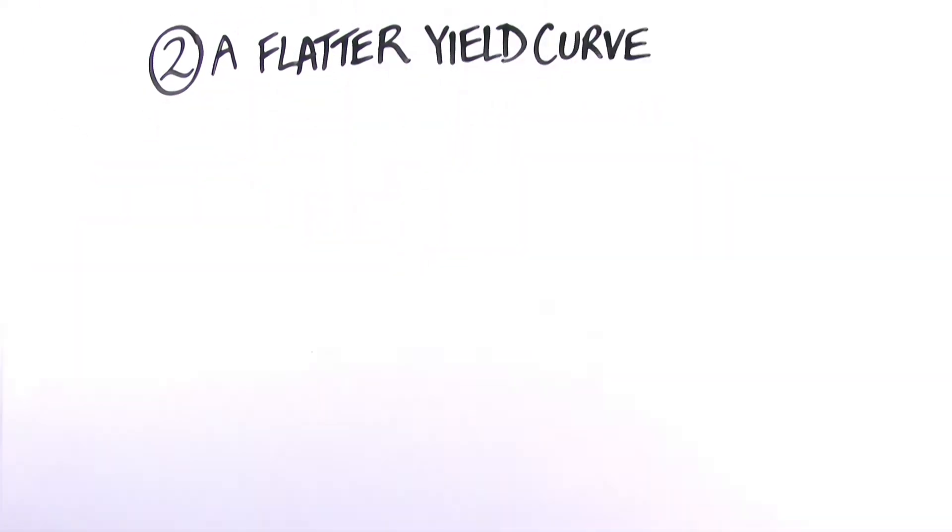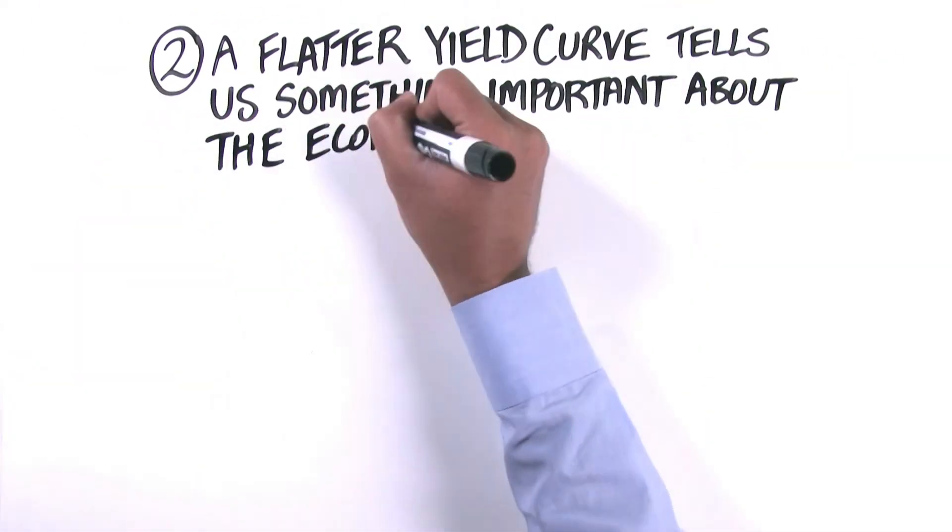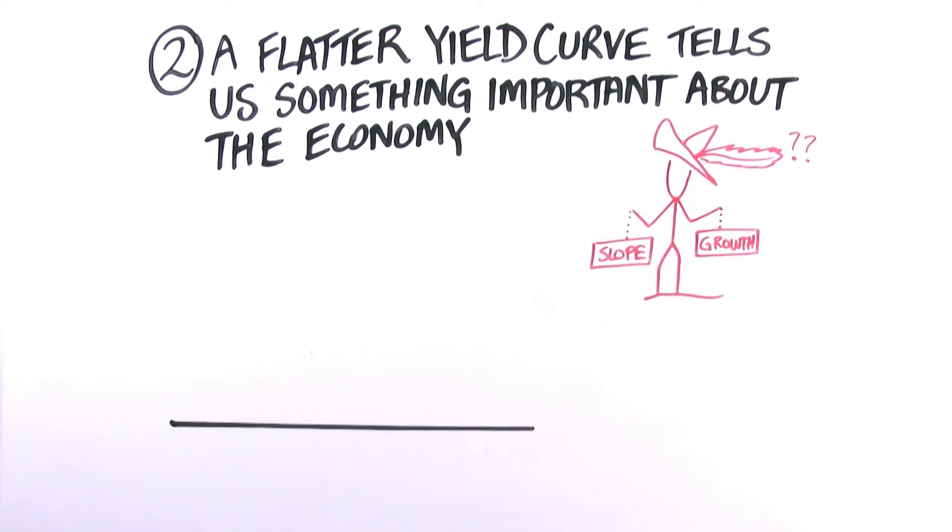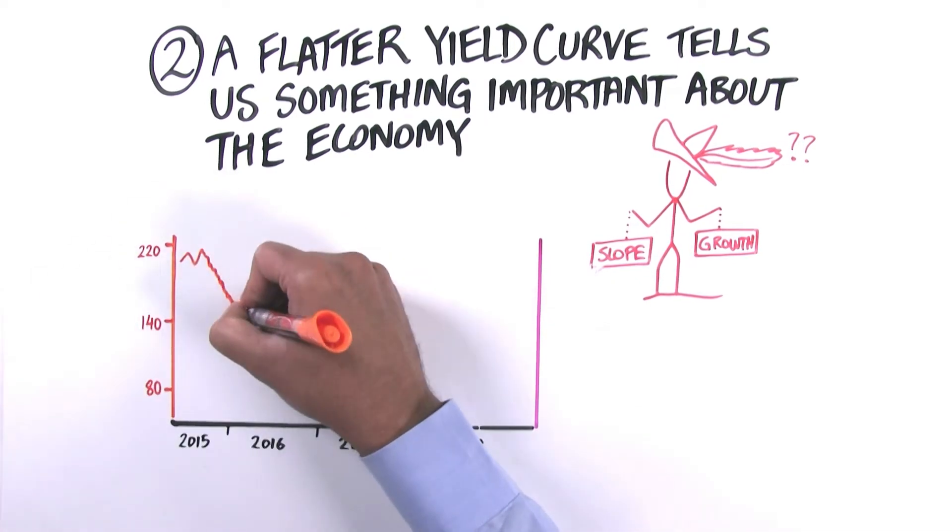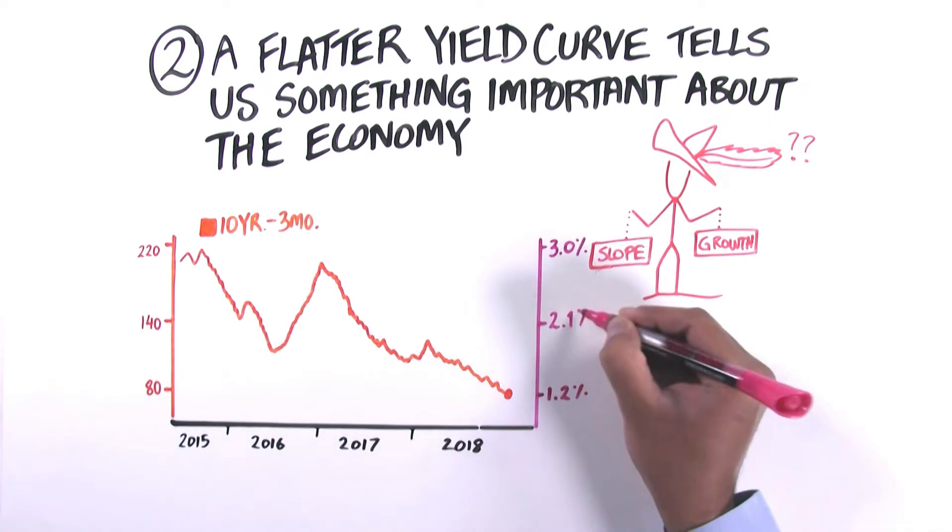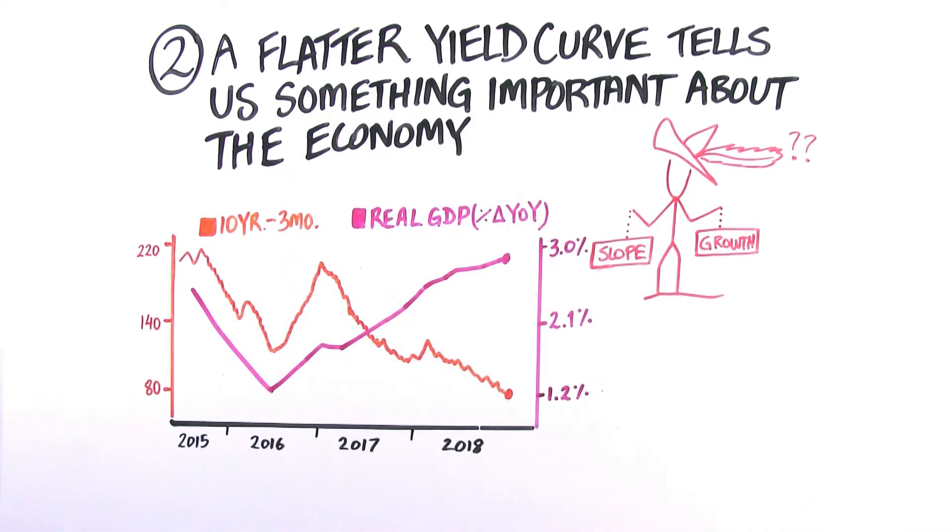Number two: People say, okay, inversions aside, a flatter yield curve tells us something important about the economy. Again, we don't think so. We can't find a relationship between the slope of the yield curve and economic growth. Think of it this way: The yield curve has been flattening relentlessly in the past three years, and economic growth has accelerated.